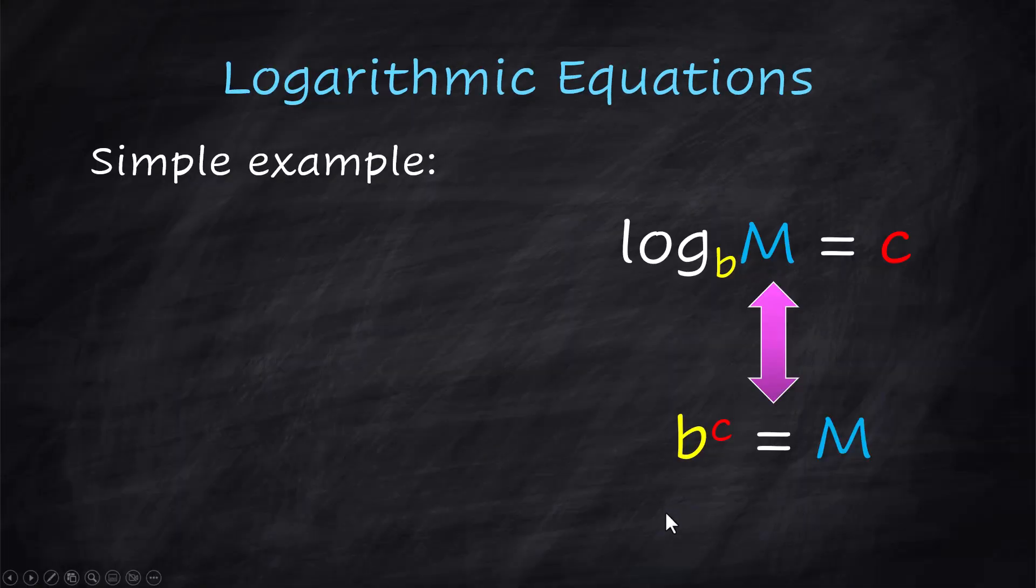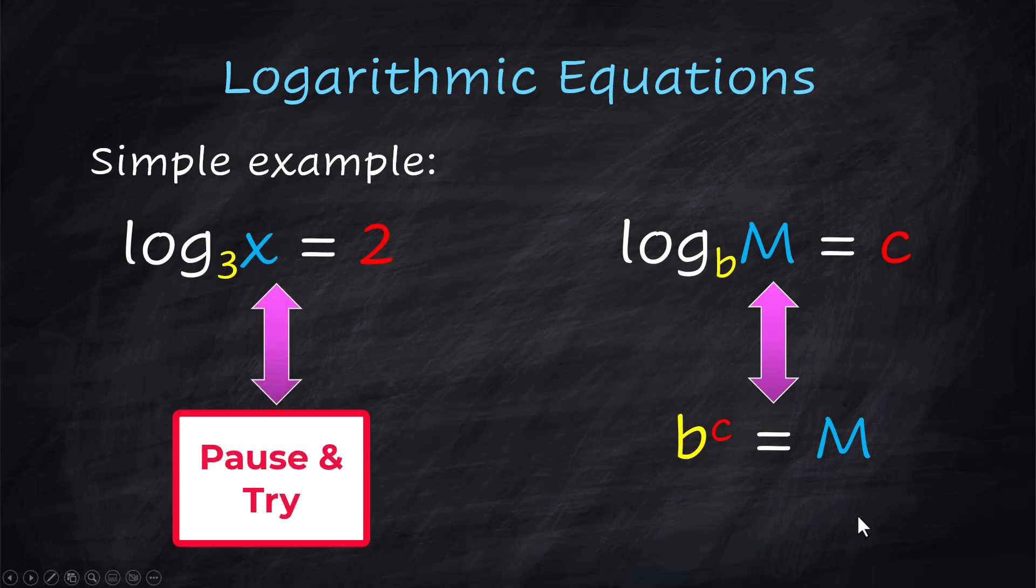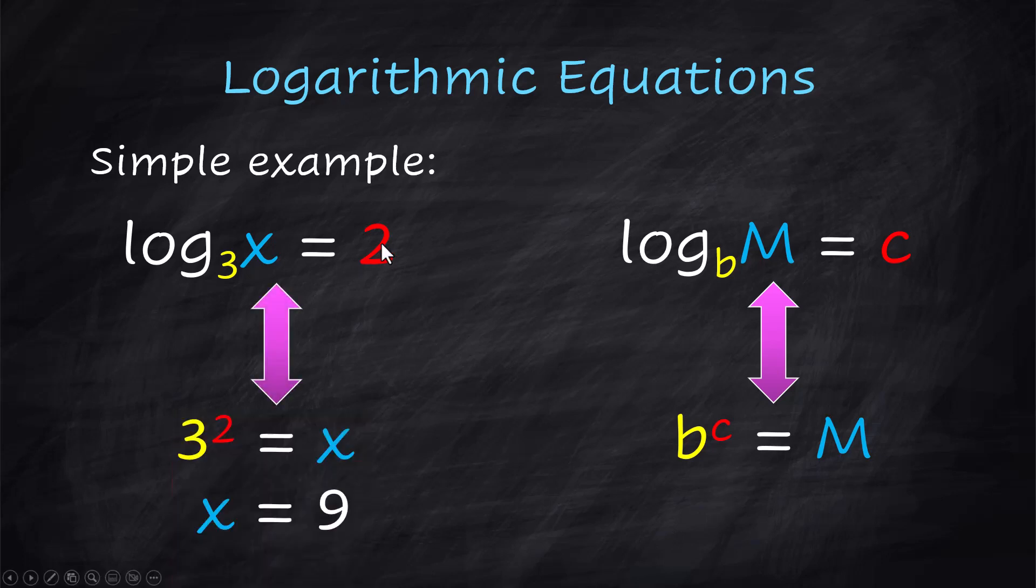Let's look at a simple example with some numbers because I think that's going to make it a little easier. I want you to convert log base 3 of x equals 2 into something that looks like an exponential equation. The base is 3, so the exponent is 2. So 3 squared equals x. And now we can solve it easily. Then we know that x equals 9. That's the advantage of understanding this relationship and how to convert.